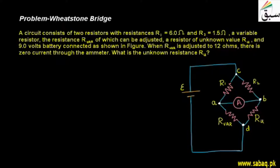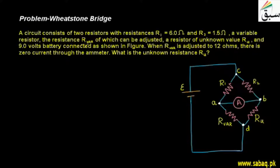Welcome students. We had discussed the topic of Wheatstone Bridge and we will solve a related problem so that our concept can be clear. A circuit consists of two resistors with resistances R1 equals 6.0 ohms and R2 equals 1.5 ohms, a variable resistor whose resistance R-variable can be adjusted, a resistor of unknown value R-U, and a 9.0 volt battery connected as shown in the figure.